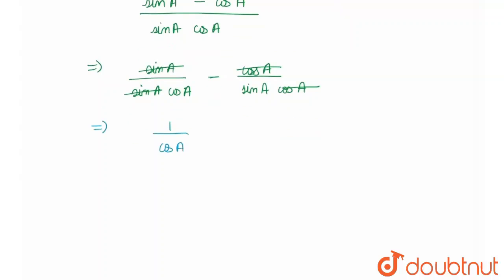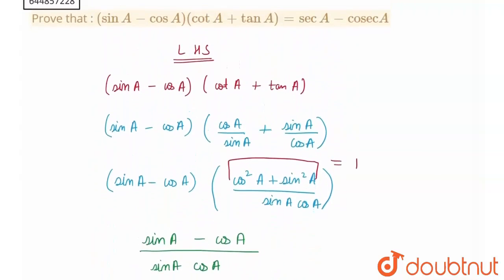Therefore, I'll be left with one upon cos A minus one upon sin A. So what is one upon cos A? One upon cos A is sec A. Therefore, my LHS term is equal to sec A minus cosec A, and I needed to prove it to be equal to sec A minus cosec A.